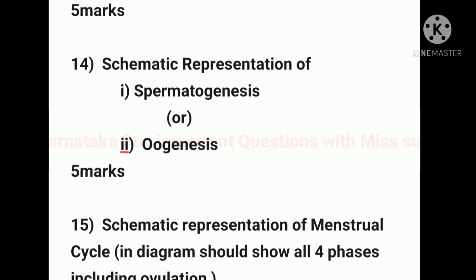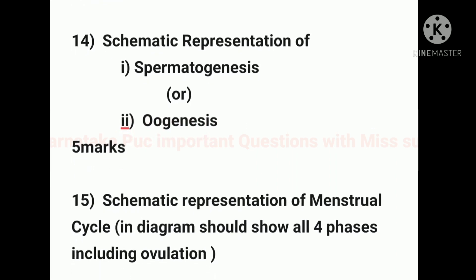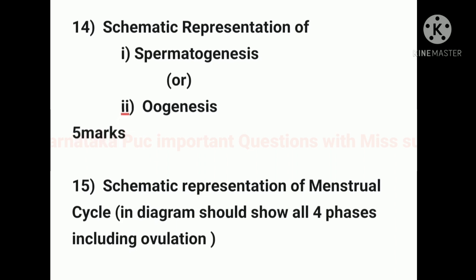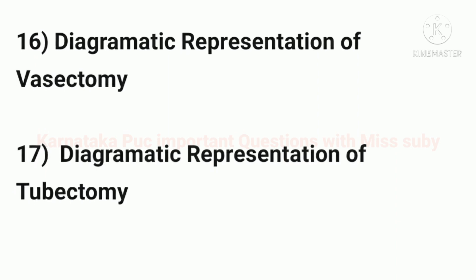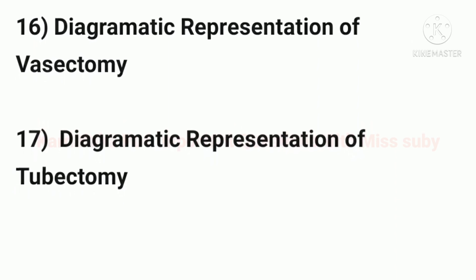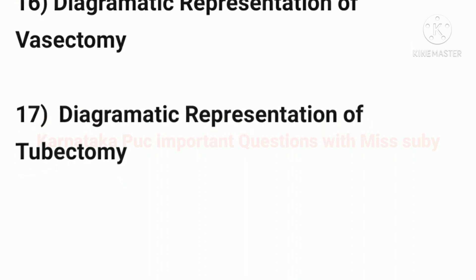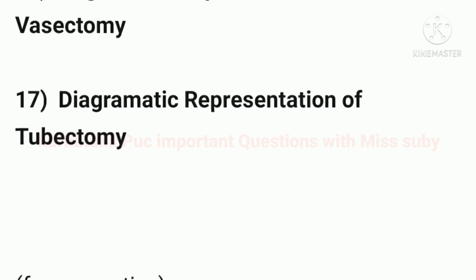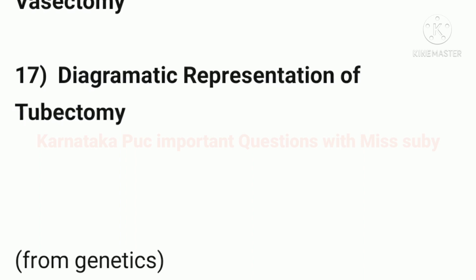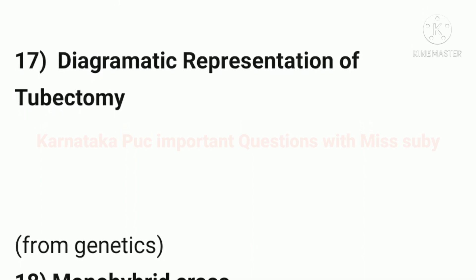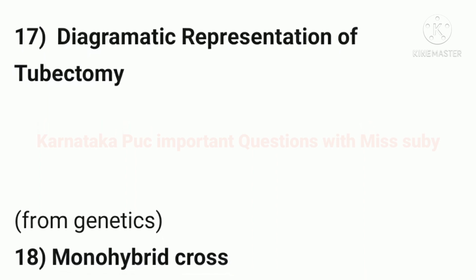Next, menstrual cycle diagram — you should show all four phases including ovulation. Next, diagrammatic representation of vasectomy. Next, diagrammatic representation of tubectomy — either one of these will be asked for 3 marks. Next, from the chapter on genetics.